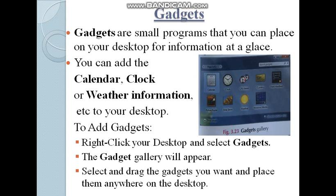To add gadgets to your desktop, right-click your desktop and select Gadgets. When you right-click the mouse, many options appear. When you click on the Gadgets option, a gadget gallery opens. Select and drag the gadget you want and place it anywhere on the desktop. You can click the mouse and drag it to where you want to place it on your desktop.